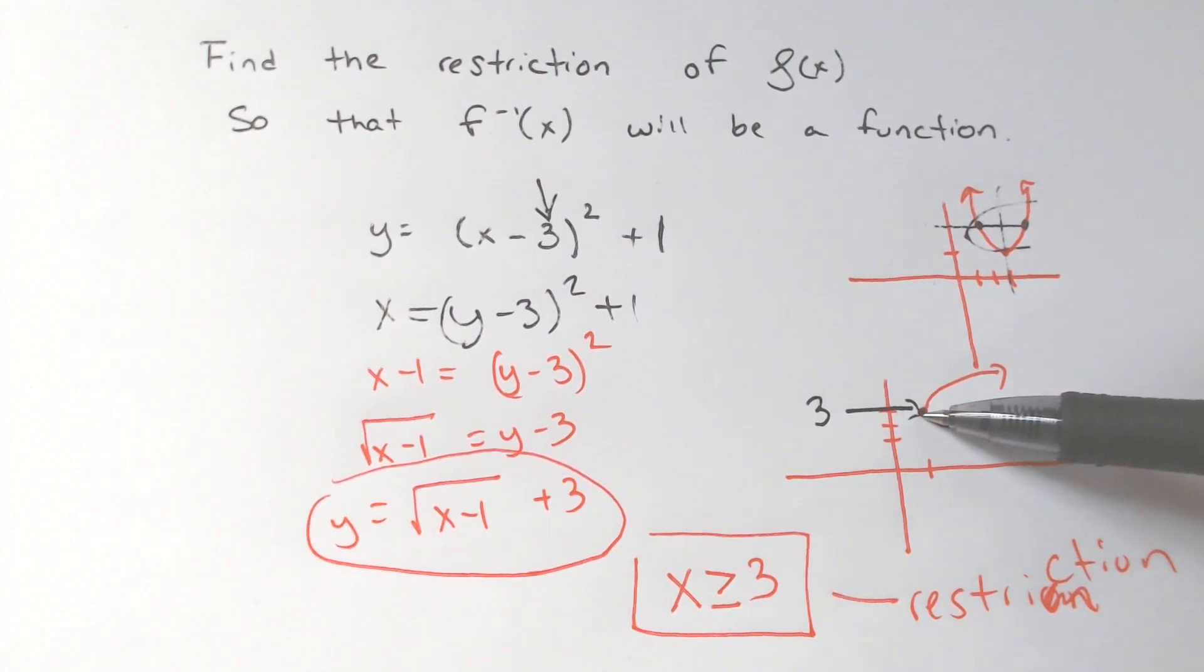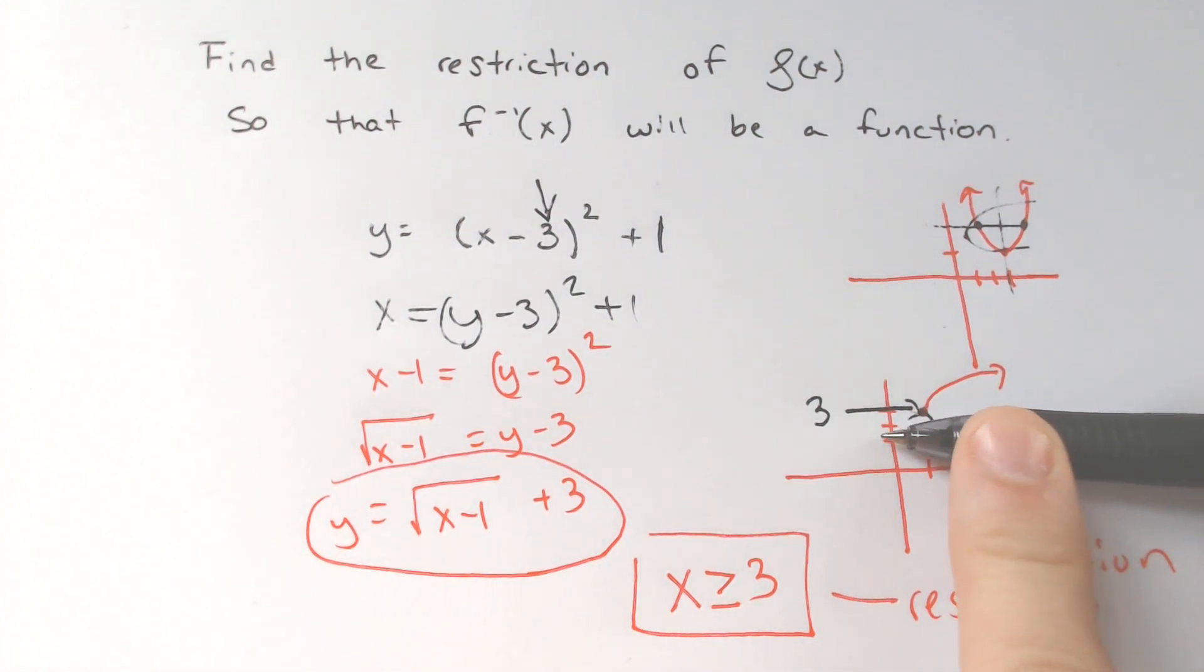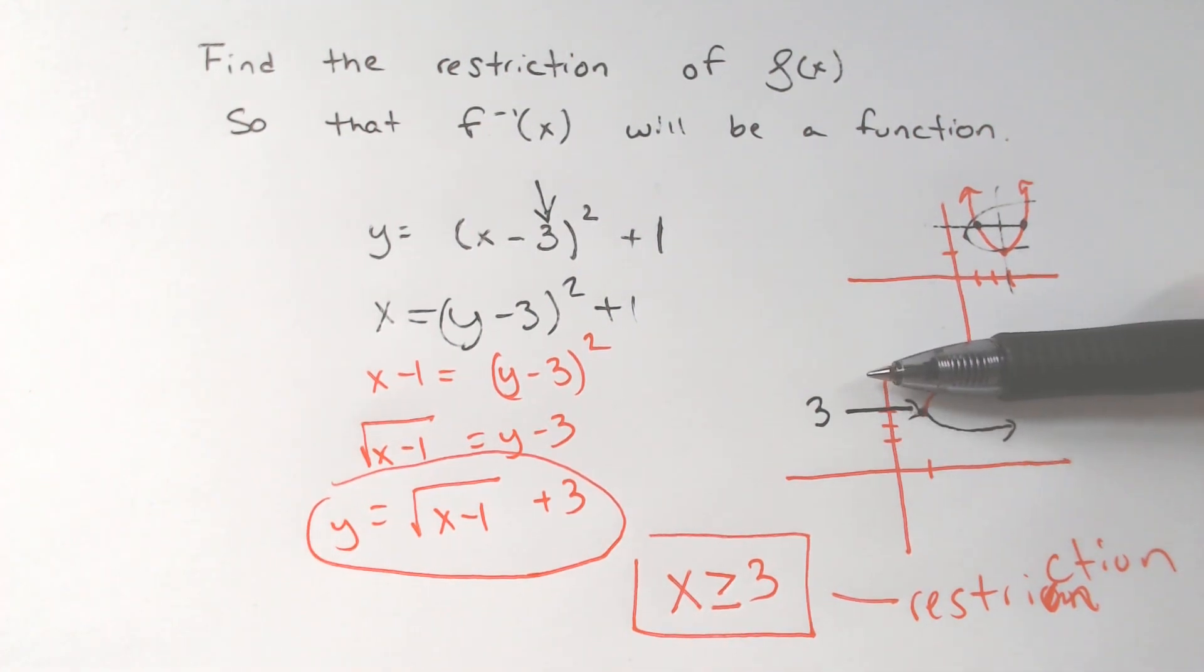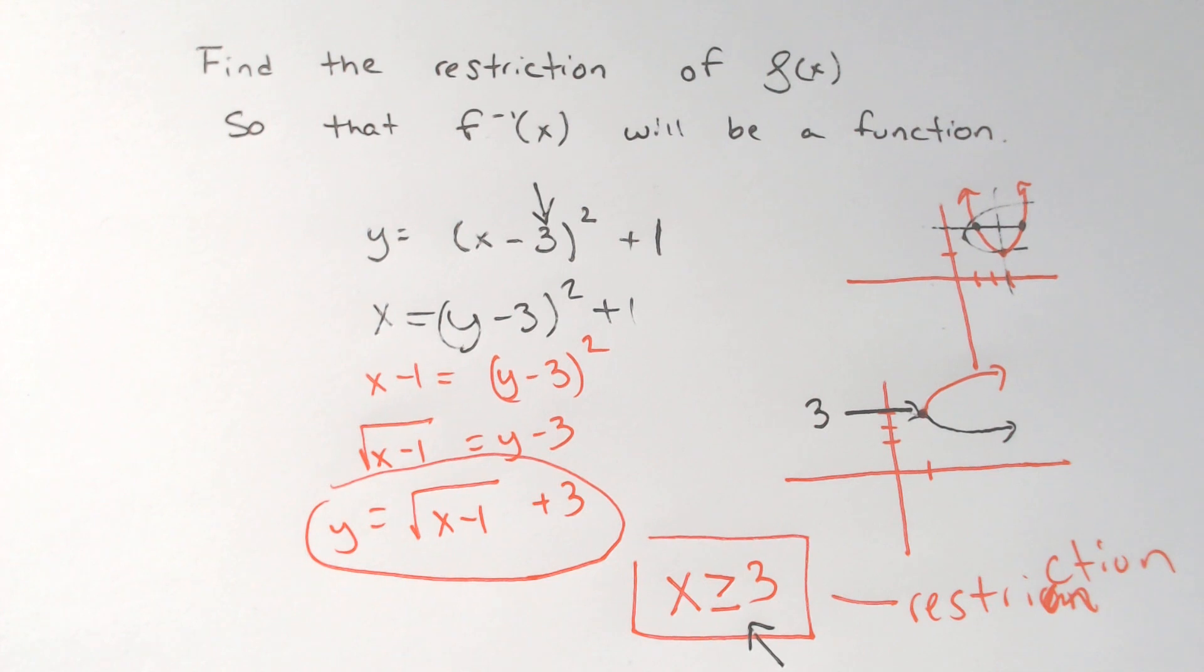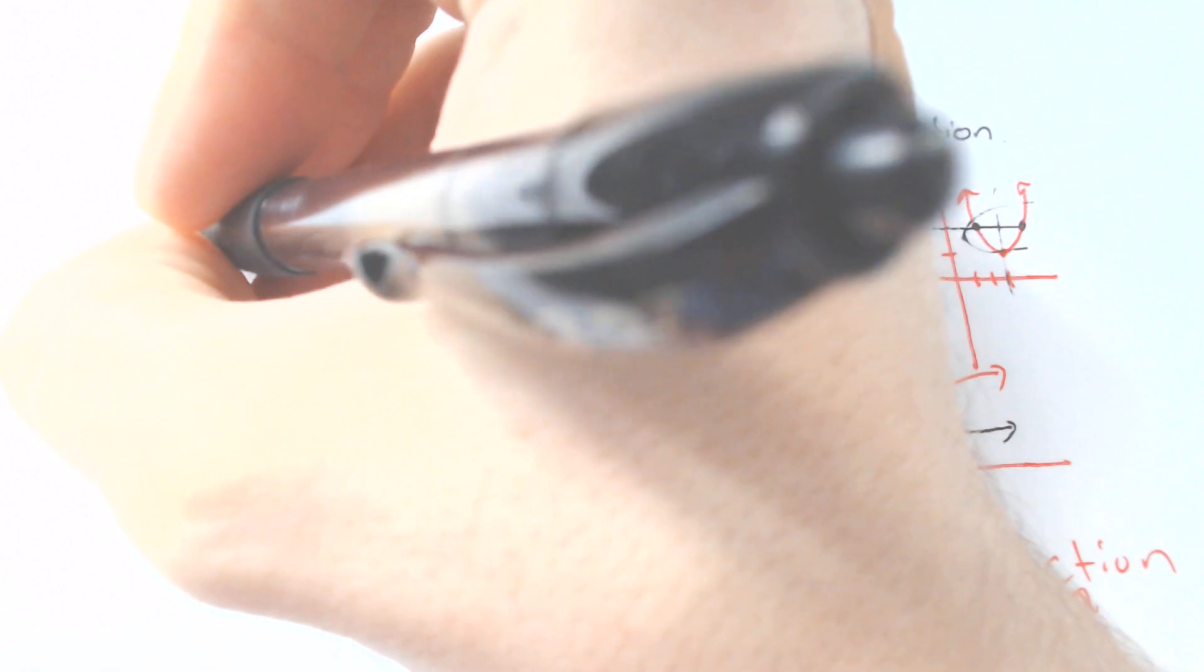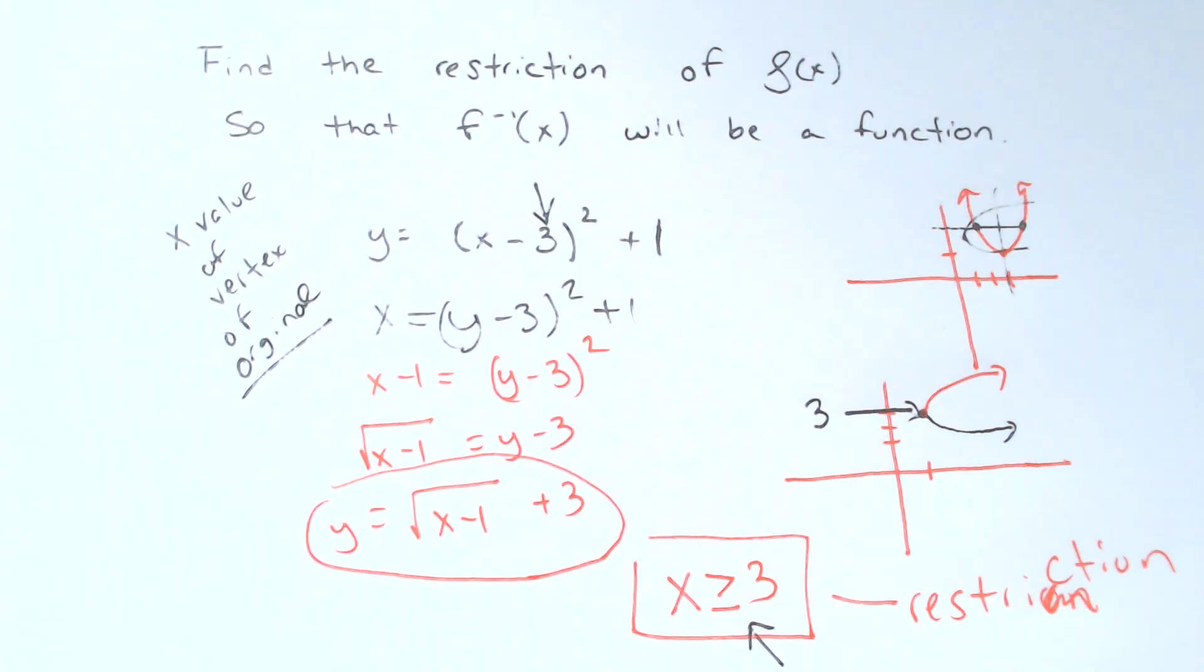Because if the original was the bigger than 3 values, it would be the red graph that I have here. If you made it less than the 3 or less than or equal to the 3, it would have been the black part underneath. It doesn't matter which one you pick, most textbooks will pick the positive one. So when it's asking you to restrict the domain, it relates to the x value of the vertex of the original, 9 times out of 10.